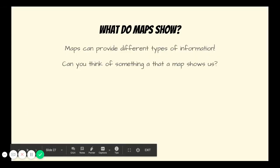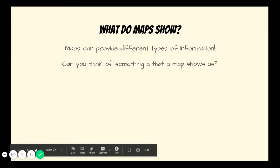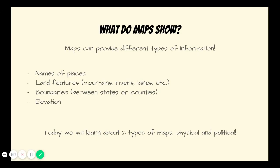We've talked about maps a little bit already this year. So what do maps show? Maps can provide different types of information. Can you think of something that a map shows us? Pause this video and tell someone at home. Some information that maps can provide are names of places, land features such as mountains, rivers, lakes. Maps can show boundaries between states or boundaries between countries, and maps can also show elevation — how high or low a place is.